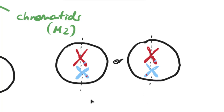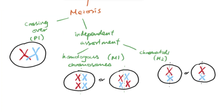Depending on which combination you get, you already have four different varieties — and keep in mind, I'm only showing two chromosomes here. In reality we've got a lot more, especially in humans where we start with 46 chromosomes, so there will be many more possible combinations. So just within meiosis, we can already see three major events that could lead to genetic variation.